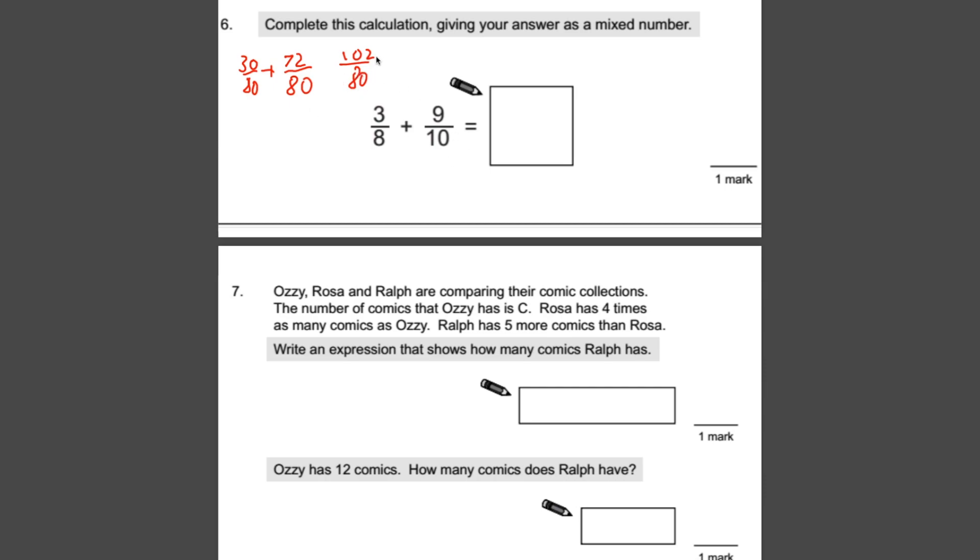Now, that's not our answer. It says leave your answer as a mixed number. And at the moment, we've got an improper fraction. So what we need to do is to convert this to a mixed number. What I would recommend doing is thinking, well, how many eightieths do I need to make one whole? So obviously the answer would be 80 eightieths. That makes one whole. So if I subtract 80 eightieths from 102 eightieths, I get my one whole. That's where that's gone.